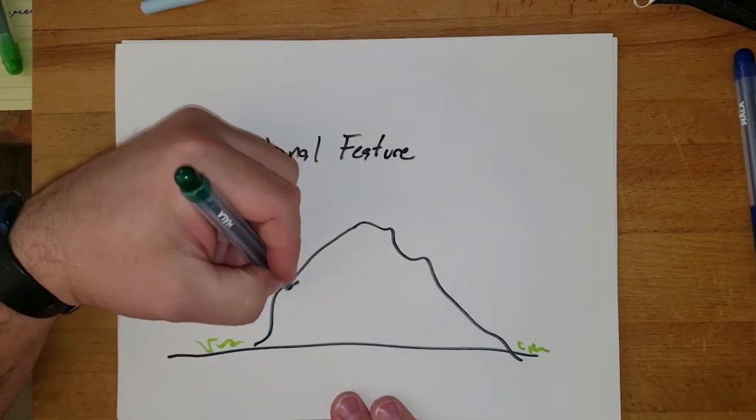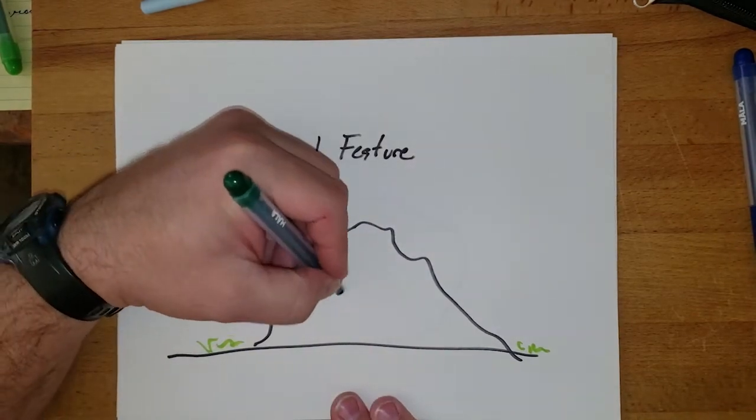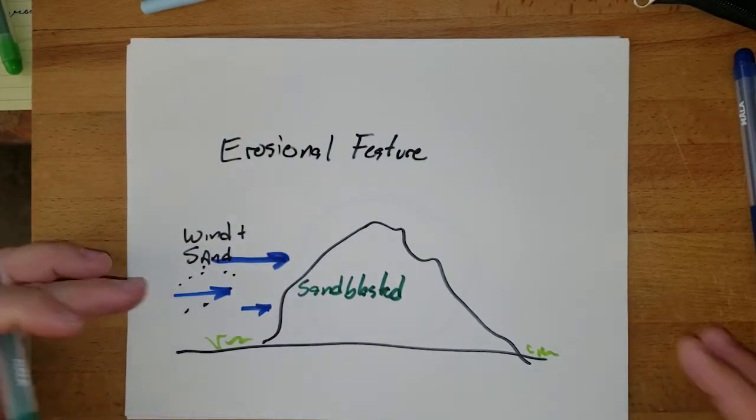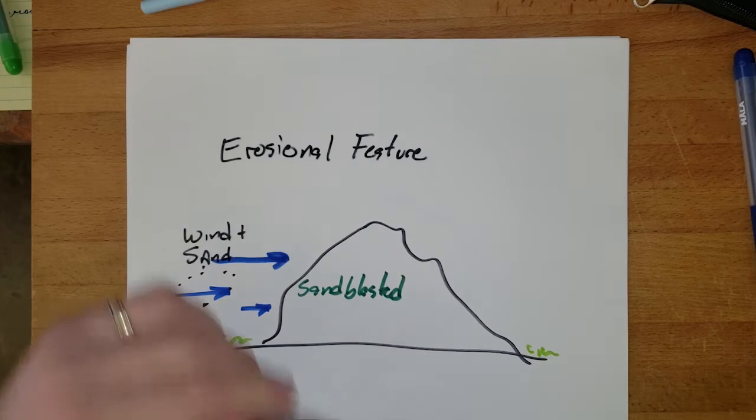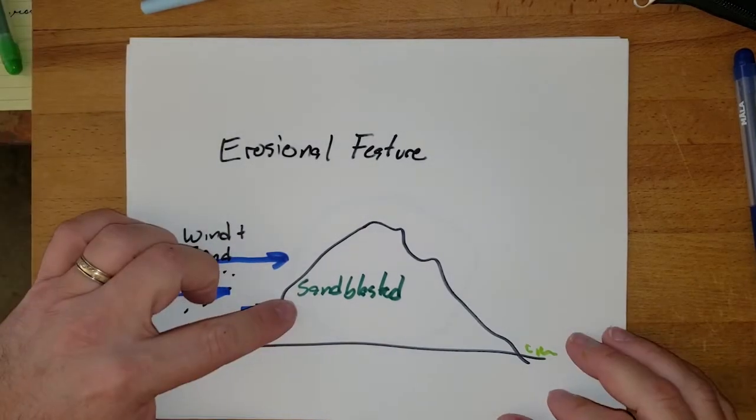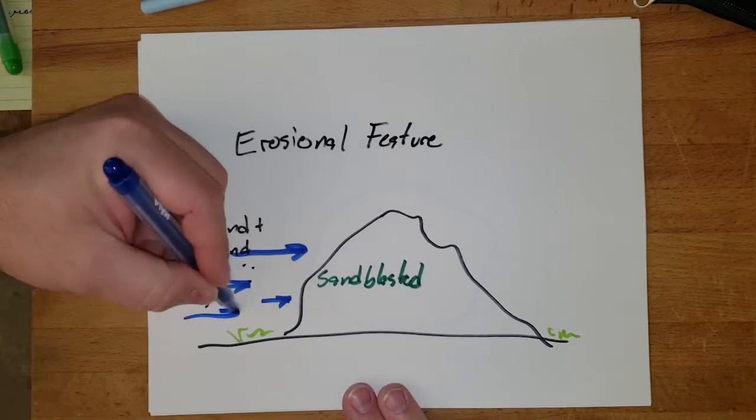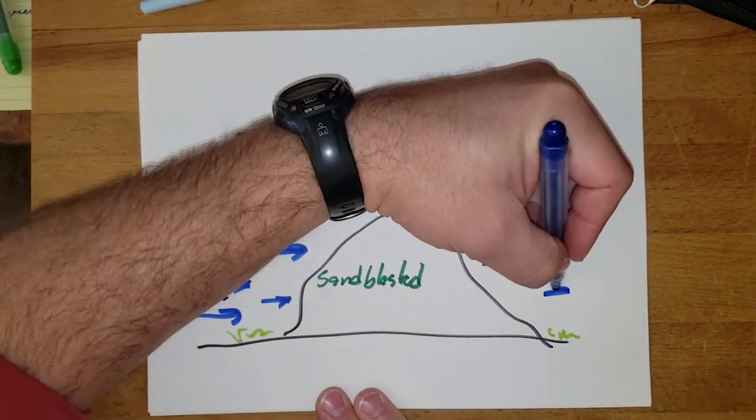What's going to happen to this poor rock is it's going to start to get sandblasted. If you've ever been to the beach on a really windy day, you know exactly what this poor rock is going through. The rock is going to be sandblasted constantly, and in our deserts we usually have a dominant direction where the wind is blowing from.